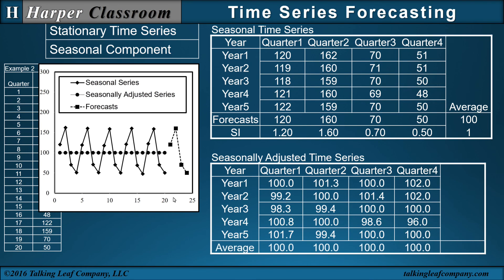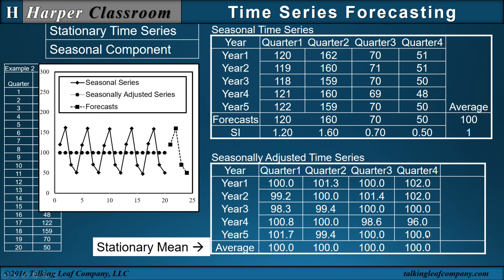Plotting the seasonally adjusted time series gives us the estimate of the stationary mean, which is 100. The average of each quarter is 100, and the average of all values is 100 — that's the estimate of the stationary mean. Summing every row gives the annual time series, and the average of the annual time series is 400 — that's the stationary mean of the annual time series. The stationary mean of the quarterly time series is 100.